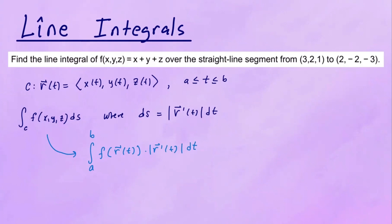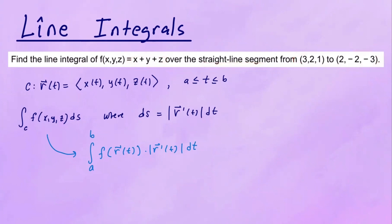So we're going to compose F with the smooth parametrization of the curve, multiply that with the magnitude of R prime of T, and then integrate with respect to T. Let's see how this works with this particular example. We want to find the line integral of this function over the straight line segment, so we need to find a smooth parametrization of this segment.